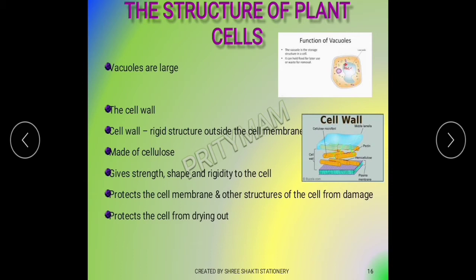In plant cells we have a cell wall. What is a cell wall? It is a rigid structure which is outside the cell membrane. The cell wall gives strength, shape, and rigidity to the cell.